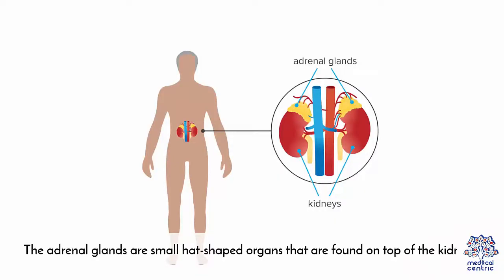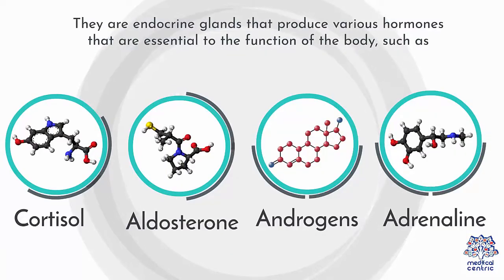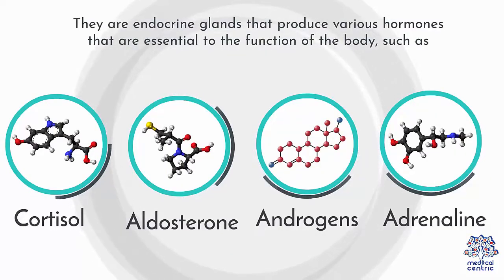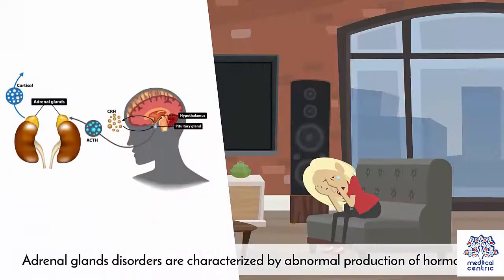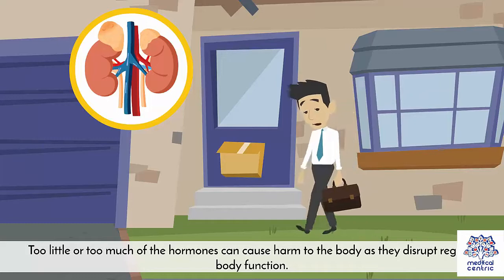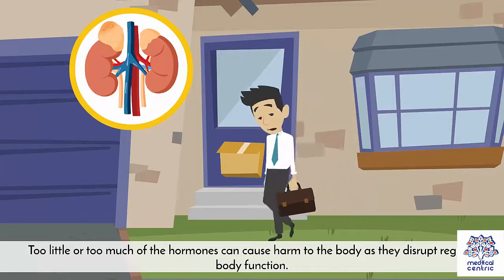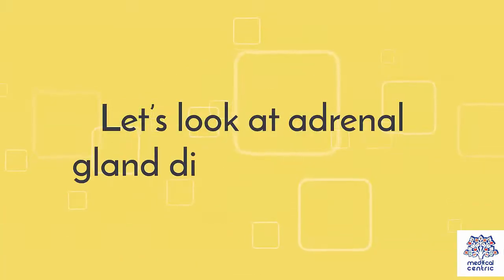The adrenal glands are small, hat-shaped organs that are found on top of the kidneys. They are endocrine glands that produce various hormones essential to the function of the body, such as cortisol, aldosterone, androgens, and adrenaline. Adrenal gland disorders are characterized by abnormal production of hormones. Too little or too much of these hormones can cause harm to the body, as they disrupt regular body function. The type of disorder you could suffer from depends on the hormone that is being produced abnormally.